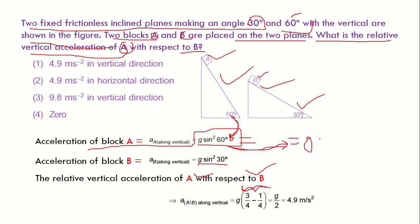Sine 60 degrees equals root 3 by 2. If we square it, it will become 3 by 4, and sine 30 equals 1 by 2. If we square it, it will become 1 by 4. After subtracting, remaining will be 1 by 2 and g is here. If you substitute the value of g, that is 9.81, in this equation, the final answer will be 4.9 meters per second square. This is the relative vertical acceleration of A with respect to B.